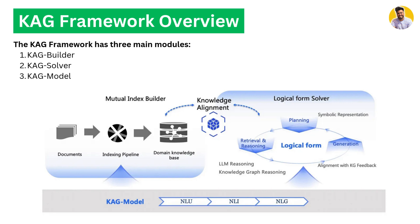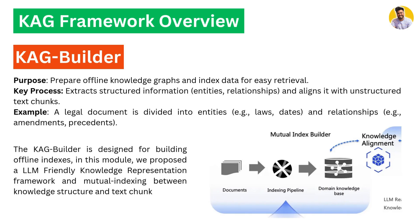The CAG Builder's main purpose is to prepare an offline knowledge graph and index data for easy retrieval. Whenever we want to extract structured information like entities or their relationships, the CAG Builder aligns structured data with unstructured chunks of text. For example, a legal document divided into multiple parts — laws, dates, relationships, amendments, presidents — is organized into a clean structured form. The CAG Builder builds an offline index so we can always get structured, reasoning-enabled responses.